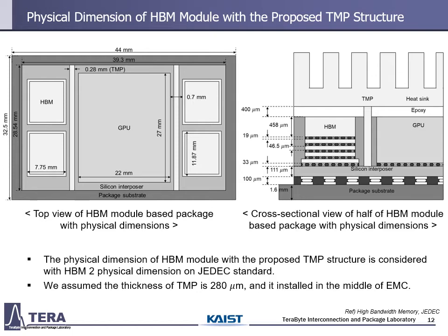This is the last slide of the proposal chapter. We assumed the physical dimensions of the HBM module with the proposed TMP structure considering HBM2 physical dimensions on the JEDEC standard. The thickness of TMP is 280 micrometers and it is stored in the middle of the molding compound. The other dimensions are represented in the above figure.